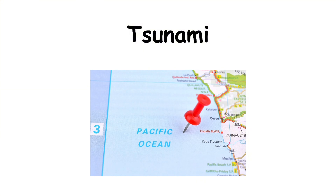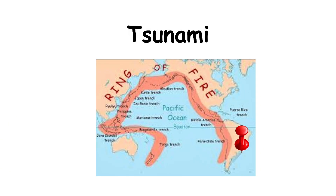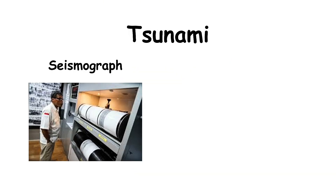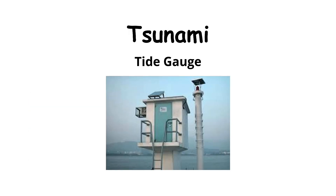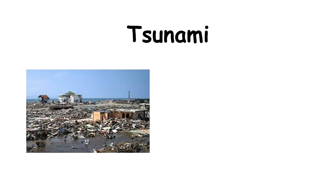Tsunamis are most common in the Pacific Ocean, especially along the Ring of Fire, where many earthquakes and volcanic eruptions occur. To monitor tsunamis, scientists use a network of seismographs, ocean buoys, and tide gauges. These instruments detect sudden changes in sea level and wave patterns, sending data to early warning systems.